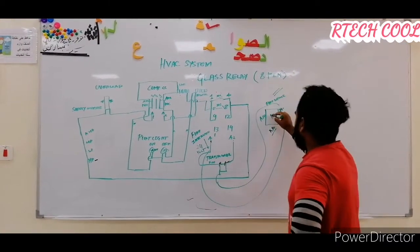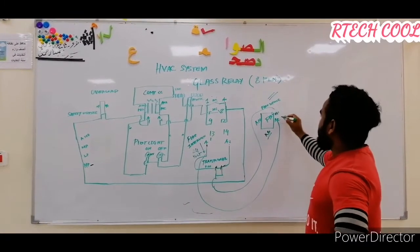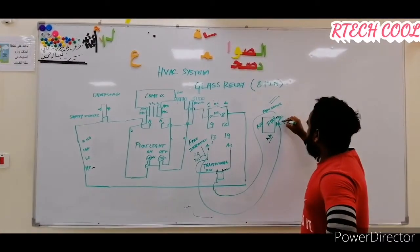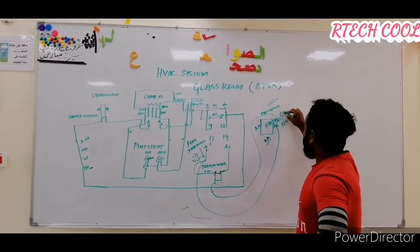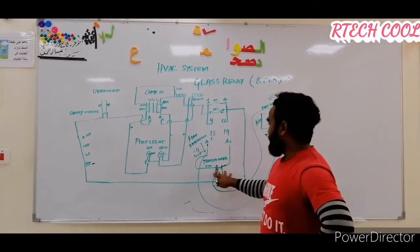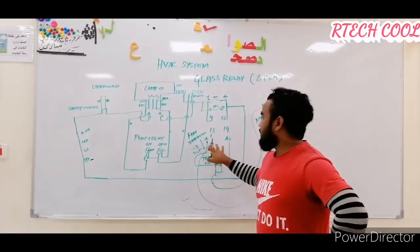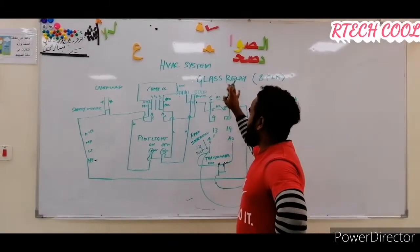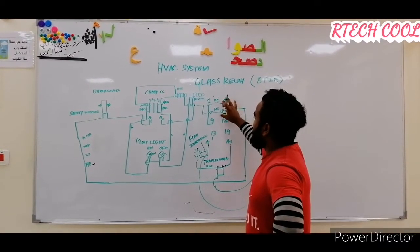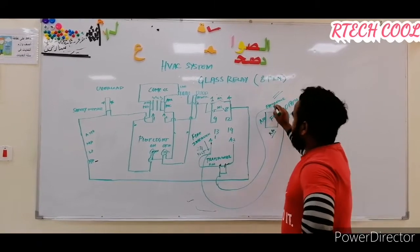If there is fire inside the building, the fire interlock NC contact will open. If that contact opens, the transformer will not supply 24V to our relay. If our relay does not energize, the NC stays NC and the NO stays NO — nothing changes. But if there is no fire, normally everything is fine, so it will change — the relay will energize.